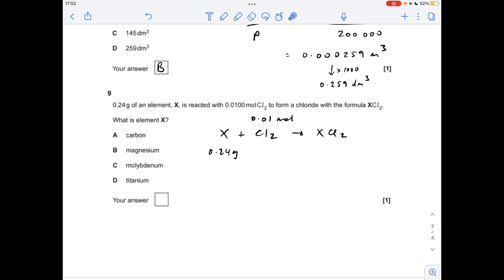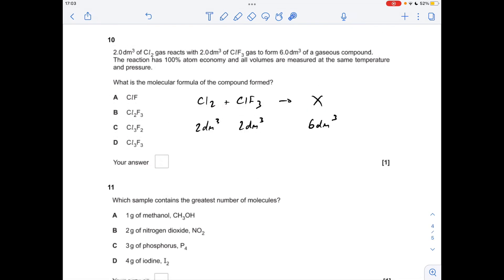Number nine. We've been given the reacting amounts, one of them in grams, one of them in moles. You'll see the reactants in a 1 to 1 ratio, so this 0.24 grams must be 0.01 moles. So to work out the MR of X, it's mass over moles, 24, which is obviously magnesium, so it was option B.